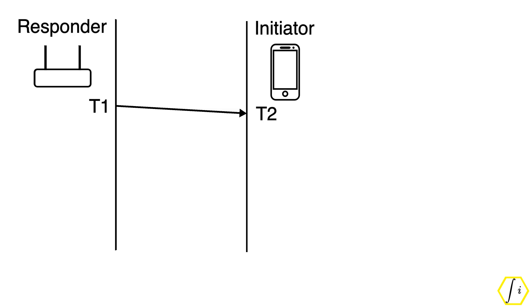This process involves the responder sending a frame to the initiator. The responder records the time of departure T1 of this frame and the initiator records the time of arrival T2. This is followed by the initiator sending a frame to the responder and let T3 and T4 be its corresponding time of departure and time of arrival respectively.